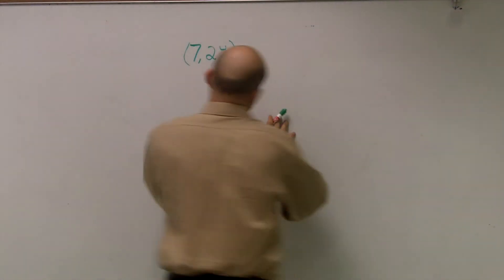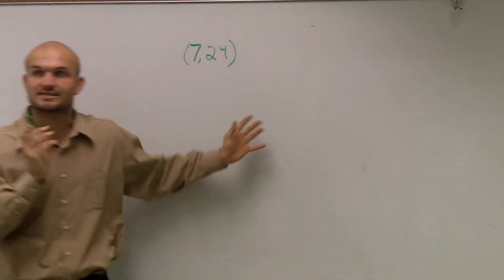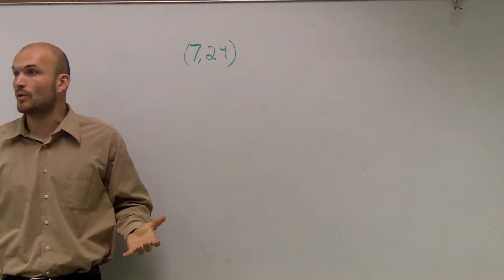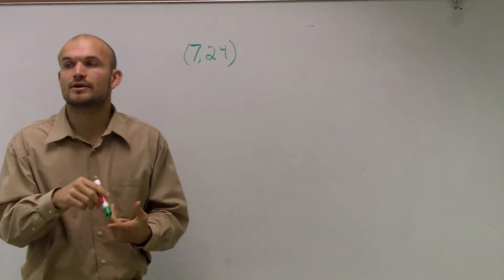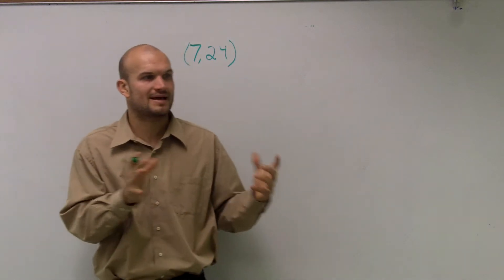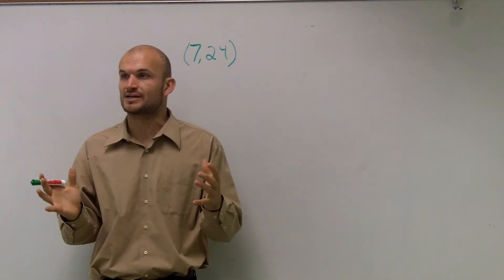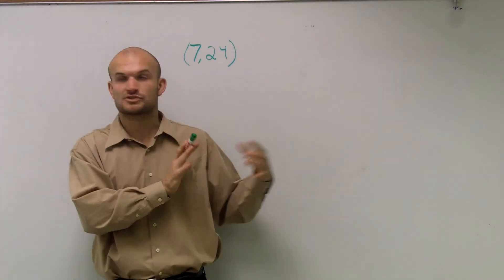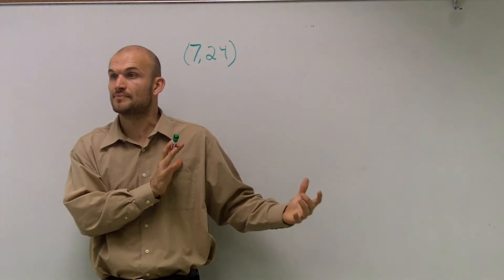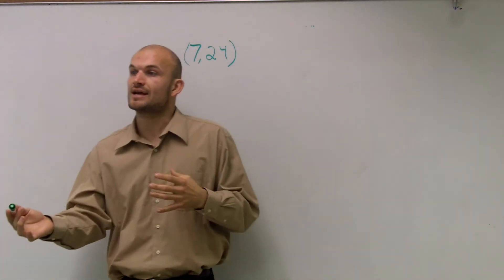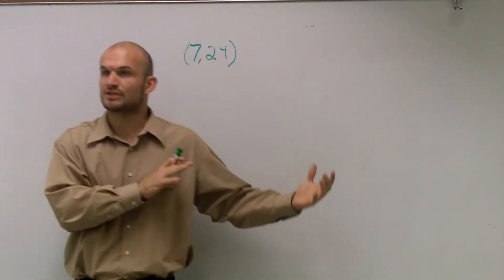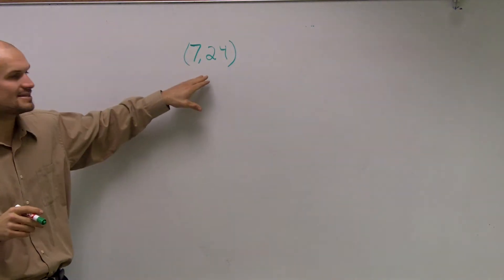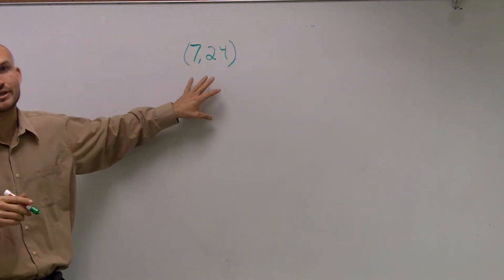What we want to do is evaluate the six trig functions, and all they give us is a coordinate point. This was easier when we had the unit circle, because for the unit circle we were given the coordinate points for certain angles. But here, this point is not going to be on the unit circle.